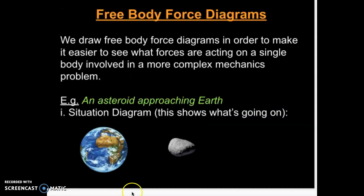So, for example, if we have a look at this asteroid approaching the Earth, it's a situational diagram, then a free body diagram of the Earth would only show the forces acting on the Earth, and the free body diagram for an asteroid would only show the forces acting on the asteroid. You would only ever draw a free body diagram for one object at a time.